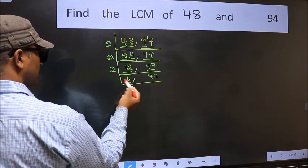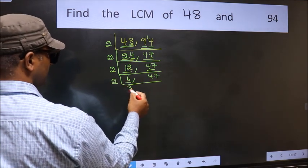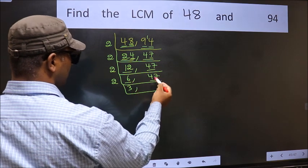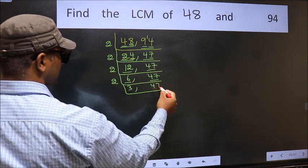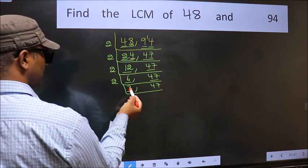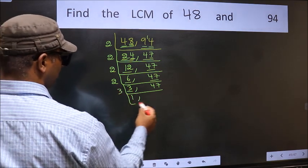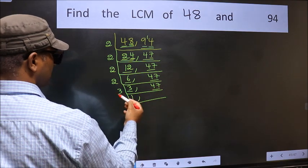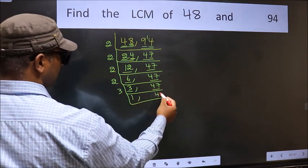Now here we have 6. In the 2 table, 2 times 3 is 6. The other number 47 is not divisible by 2, so we write it down as it is. Now here we have 3. 3 is a prime number, so 3 once is 3. The other number 47 is not divisible by 3, so we write it down as it is.